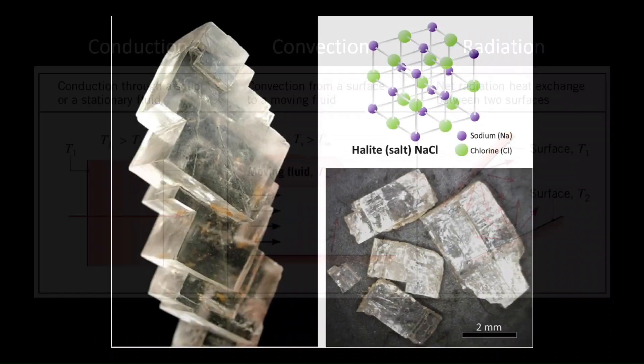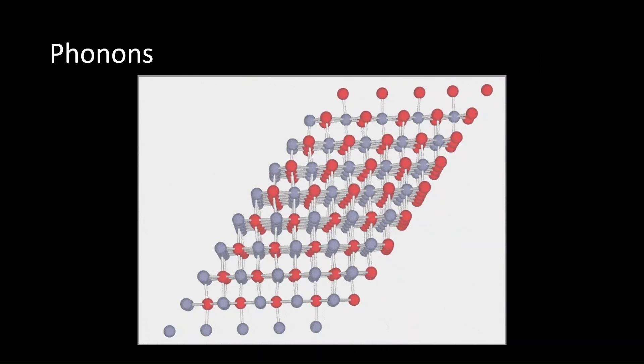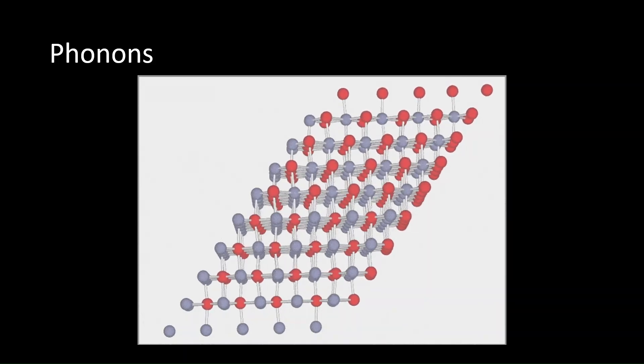The first type of heat transfer we will discuss is conduction. At the molecular level, heat is the average kinetic energy in an object. In solid lattices, atoms are bound together by interatomic forces. When heat is introduced, atoms vibrate around their equilibrium positions. When one atom is displaced in a lattice, it sets off vibrational waves known as phonons.